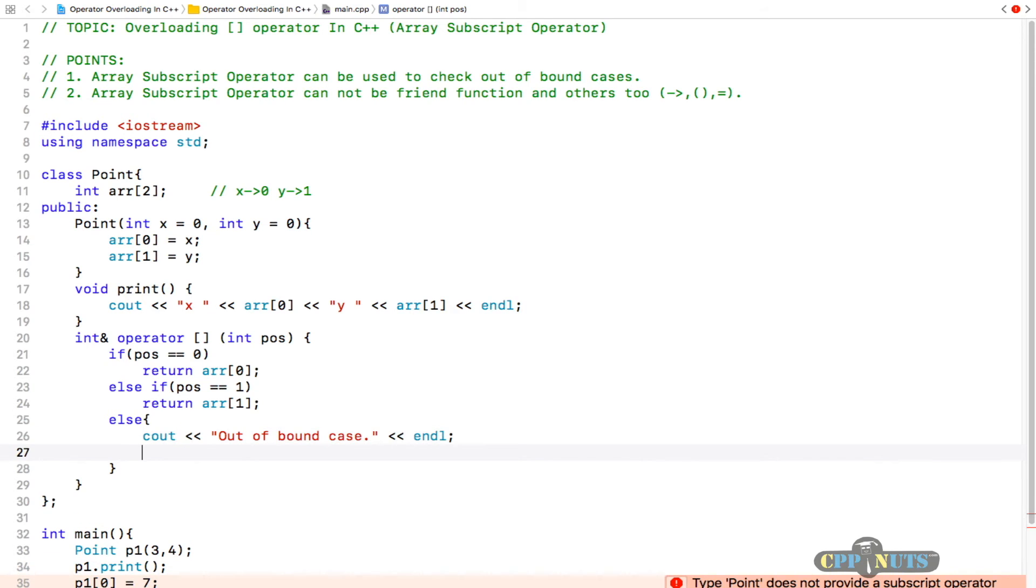From here we can simply exit the code because we cannot process this code anymore. If it is not zero and not one, in that case we'll just print one message and exit from this program.